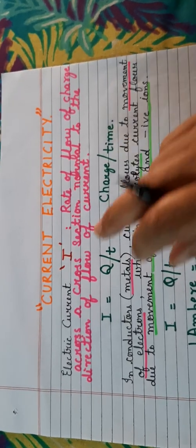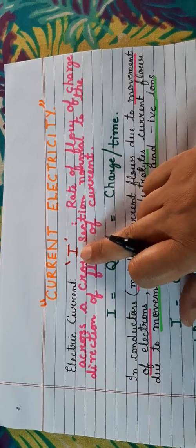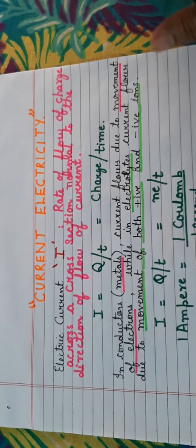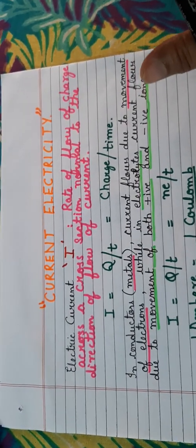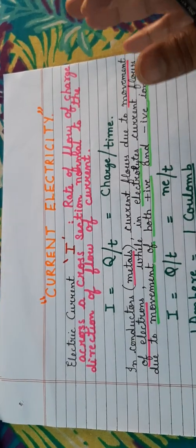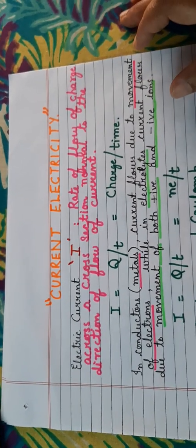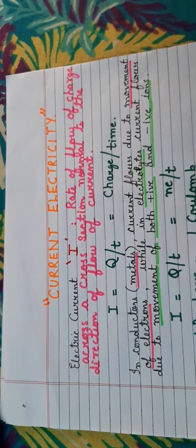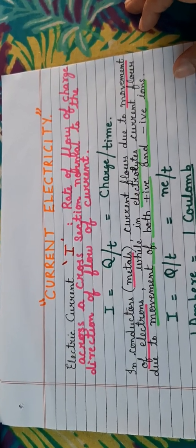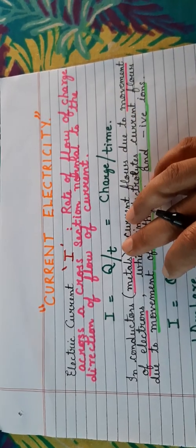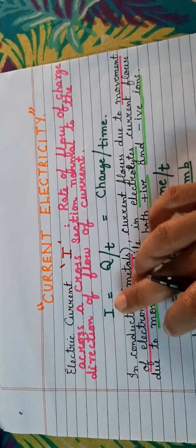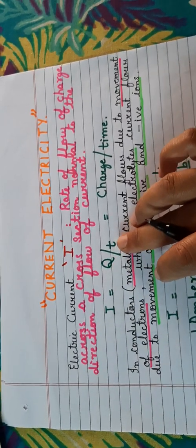Electric current is denoted by the symbol capital I, and the definition for electric current is it is the rate of flow of charge. Technically, the definition is: rate of flow of charge across a cross section of a given conductor normal to the direction of the flow of current, and it is given by the formula I = Q/T, where I stands for the current, Q for the charge, and T for the time.